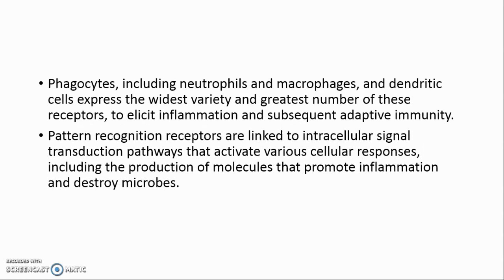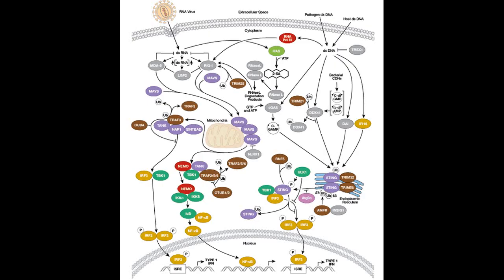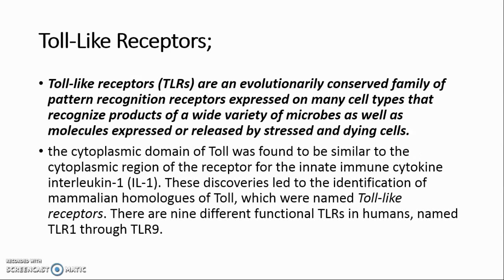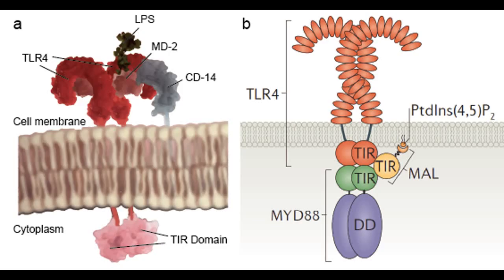Cell-associated pattern recognition receptors and sensors of innate immunity: Phagocytes, including neutrophils and macrophages, and dendritic cells express the widest variety and greatest number of these receptors to elicit inflammation and subsequent adaptive immunity. Pattern recognition receptors are linked to intracellular signal transduction pathways that activate various cellular responses, including production of molecules that promote inflammation and destroy microbes. Toll-like receptors (TLRs) are an evolutionarily conserved family of pattern recognition receptors expressed on many cell types. The cytoplasmic domain of TOLL was found to be similar to the cytoplasmic region of the receptor for the innate immune cytokine IL-1, leading to the identification of mammalian homologs named Toll-like receptors.